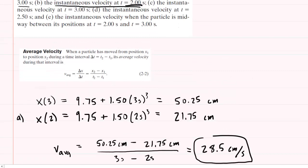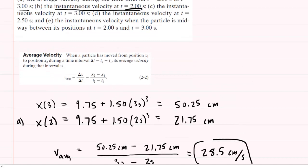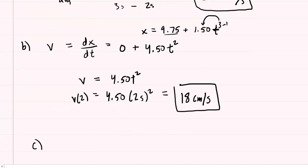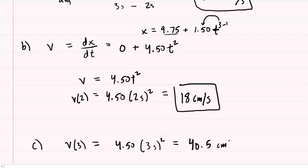In part C, we are asked to compute another instantaneous velocity, but this time at a time of 3 seconds. So we're going to compute v of 3. This will equal 4.50 times 3 seconds squared, and this turns out to be 40.5 centimeters per second. So that's the correct answer for part C.